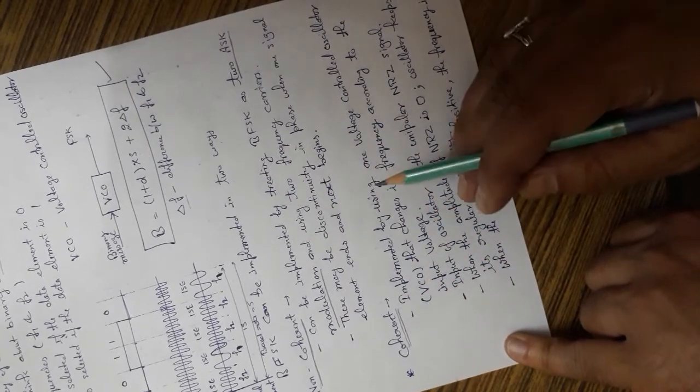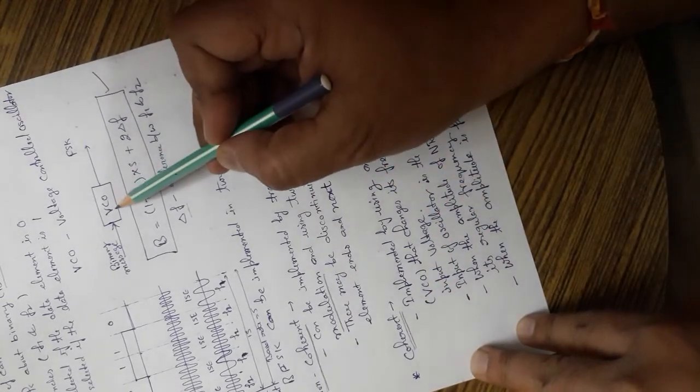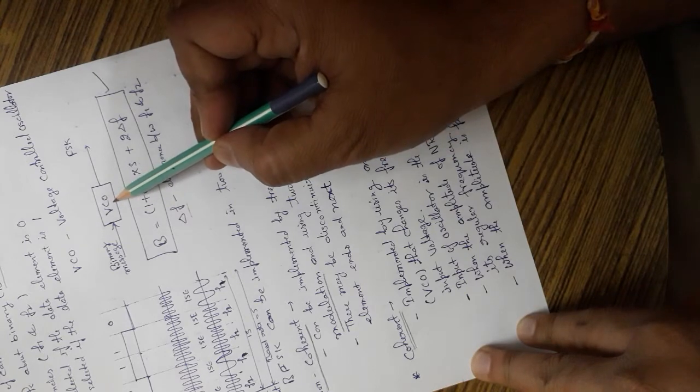The second one is coherent. In coherent, we are going to use a voltage controlled oscillator, that is VCO.